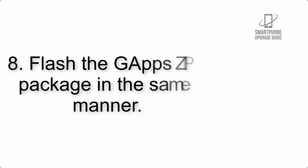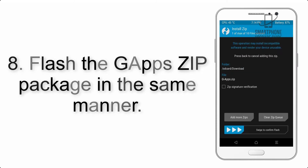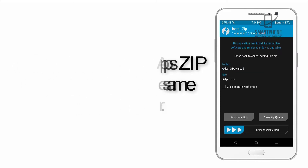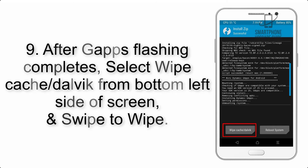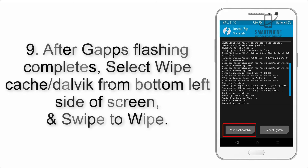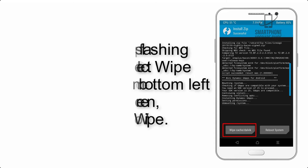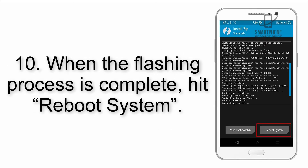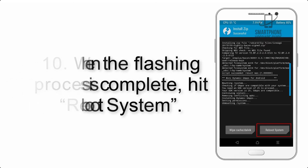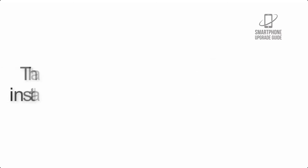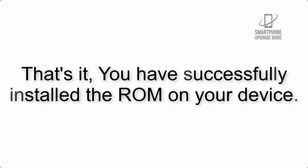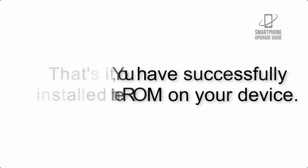Step 8: Flash the GApps zip package in the same manner. Step 9: After GApps flashing completes, select Wipe Cache and Dalvik from the bottom left side of the screen and swipe to wipe. Step 10: When the flashing process is complete, hit Reboot System. That's it — you have successfully installed the ROM on your device.